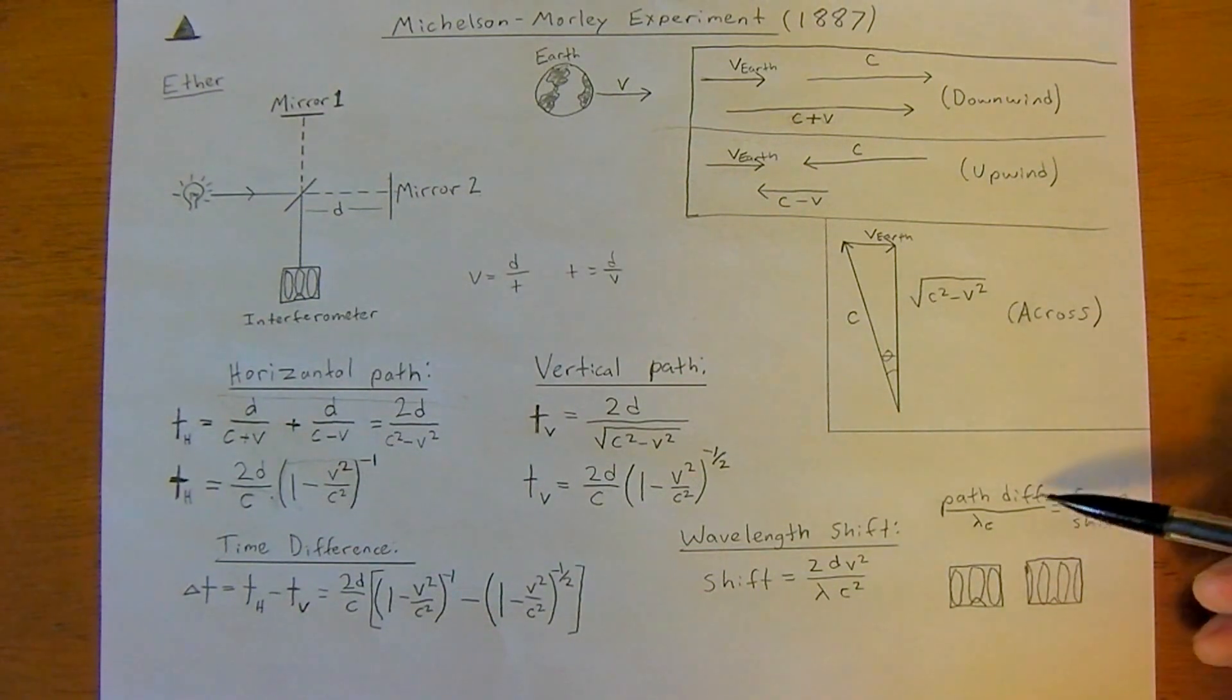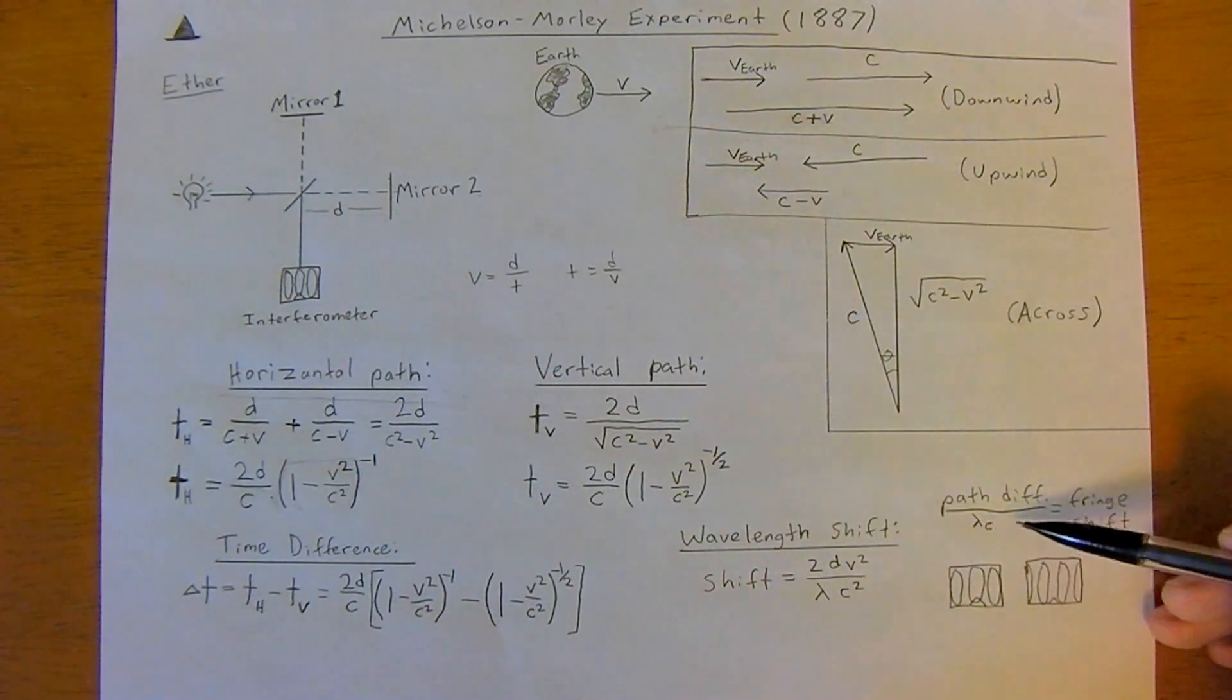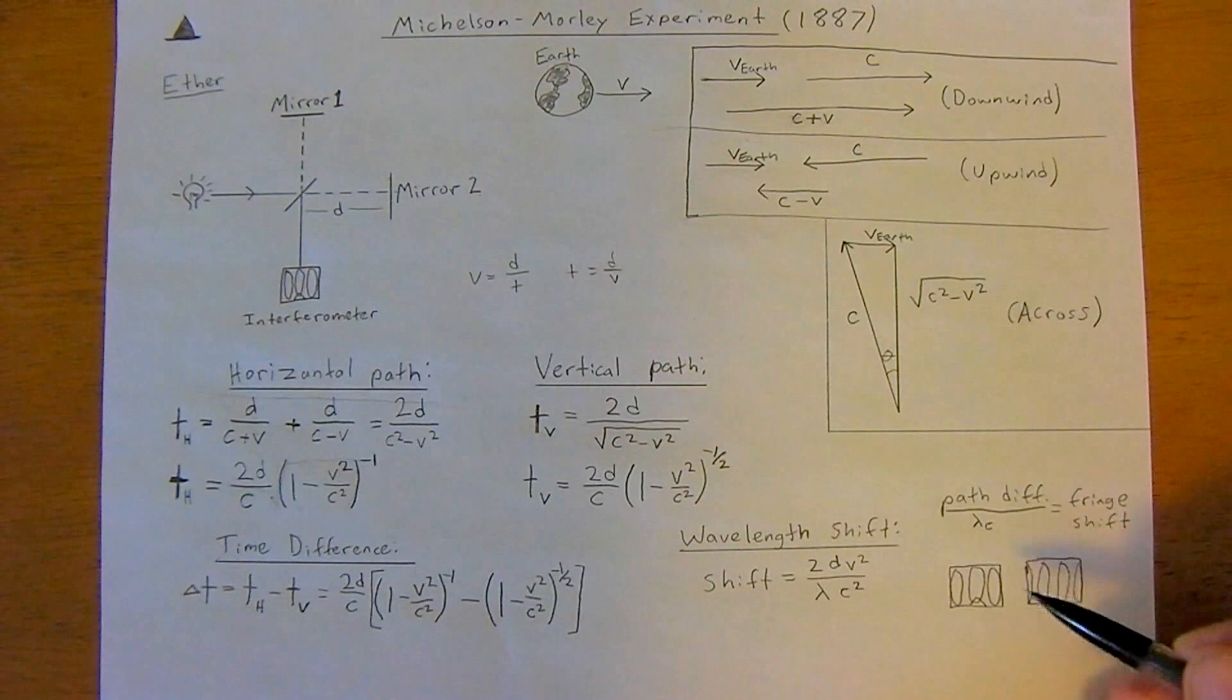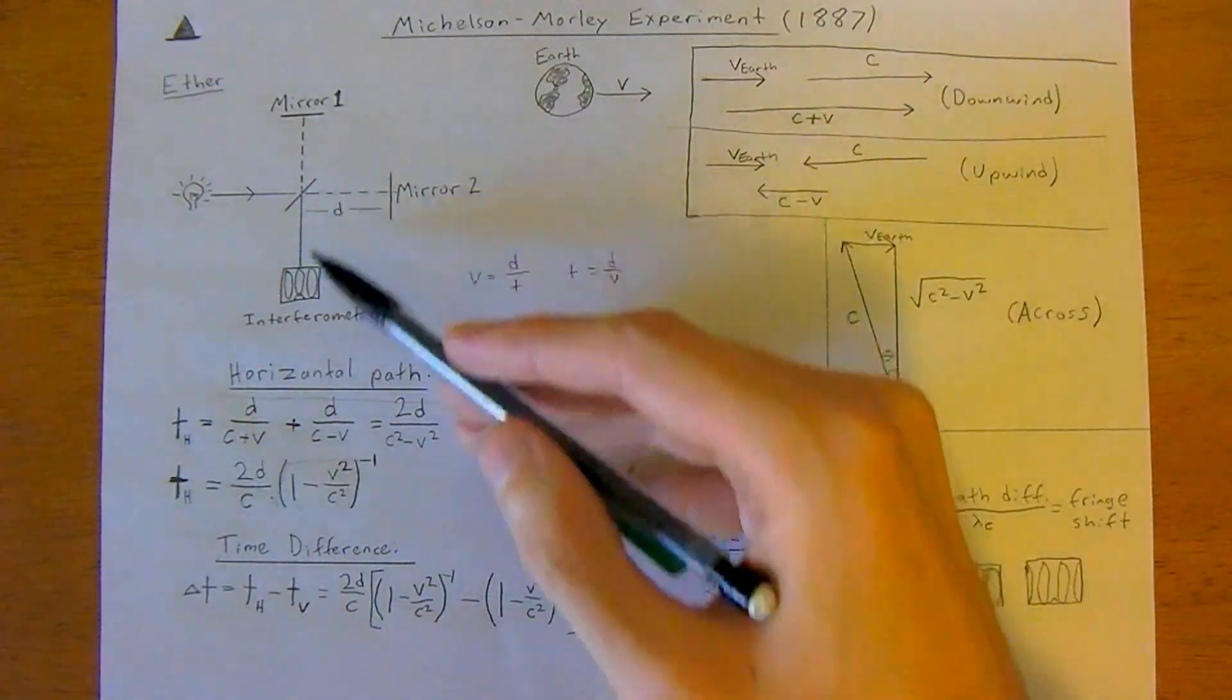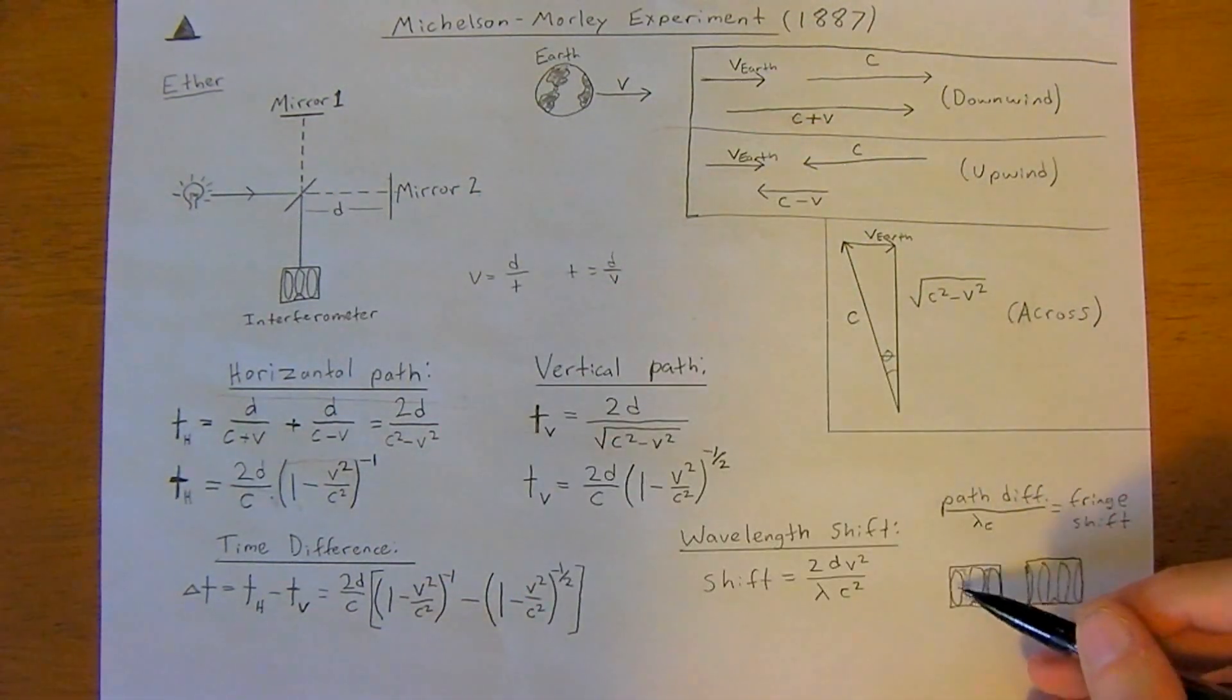That should have given the time difference. The interference pattern shift, and that interference pattern, the shift in that interference pattern, is just the path difference divided by the wavelength of light. So that's lambda—it's just the wavelength of light. That should have given the fringe shift. By fringe shift what I mean is you have these dark spots and light spots here. Say that's a light spot, this is a dark spot.